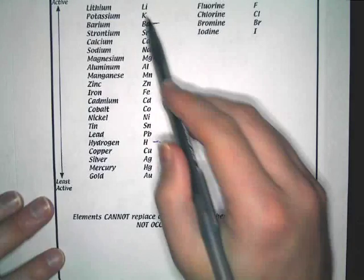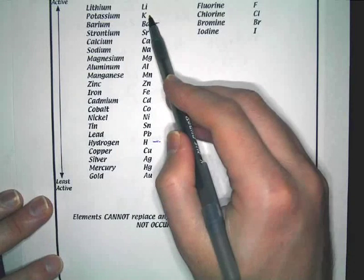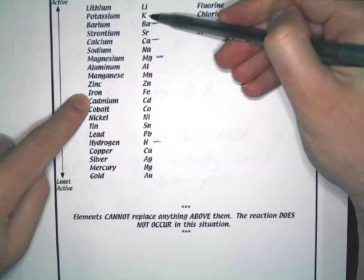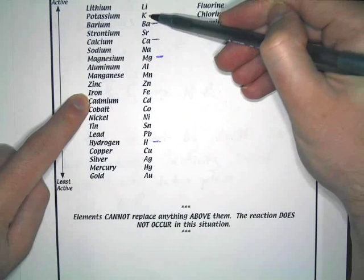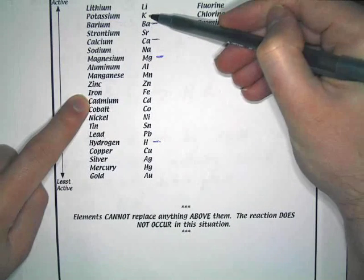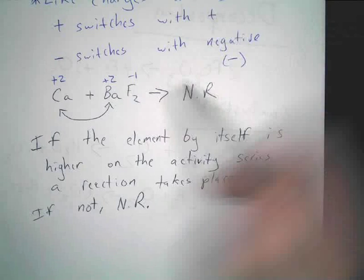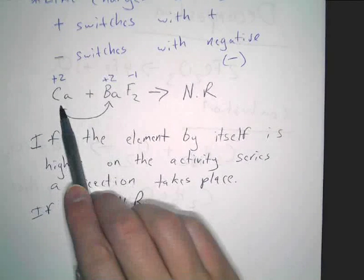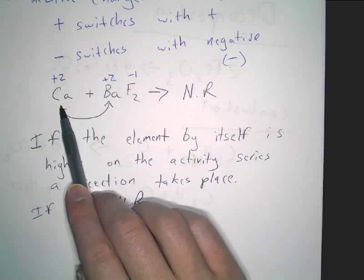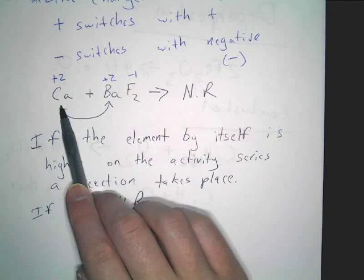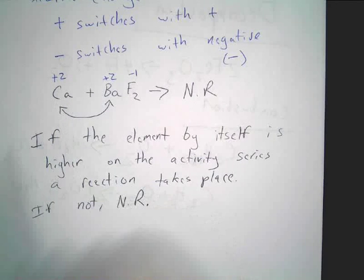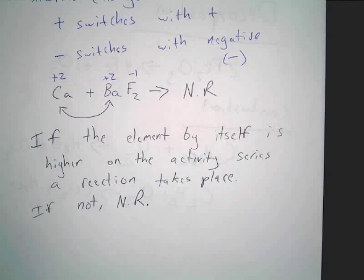Potassium is higher than iron — that's why the reaction occurred. Potassium is by itself and iron is lower. Barium is higher than calcium — that's why no reaction took place. The element that's by itself has to be higher every time. Otherwise, no reaction occurs.